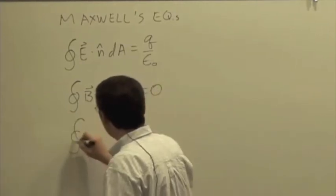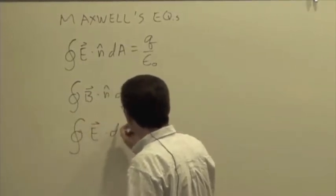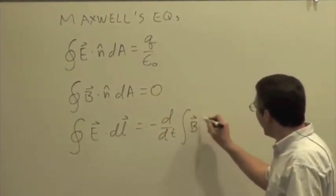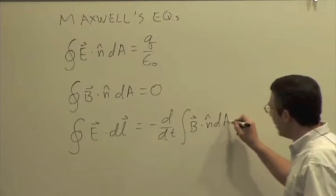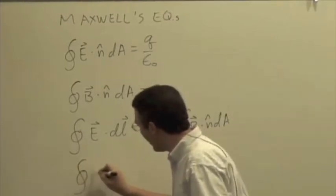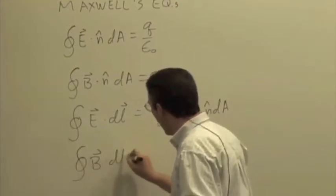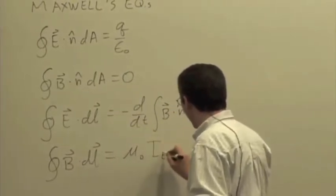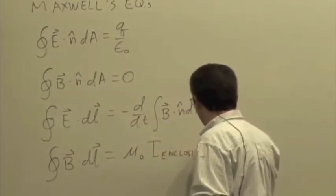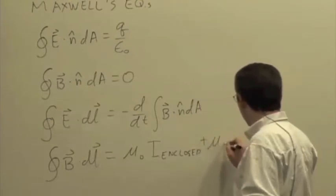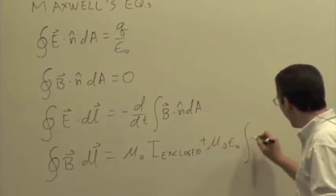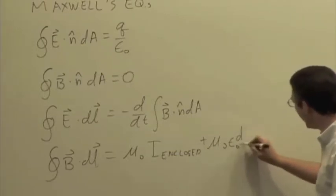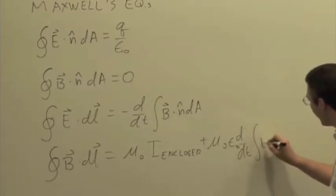We had Faraday's Law. And we had Ampere's Law, which had this correction term having to do with changing electric fields. We have current enclosed, and we also have a time derivative of electric flux through regions. So this is a time derivative, d/dt of electric flux.